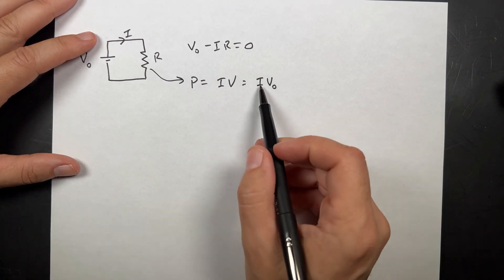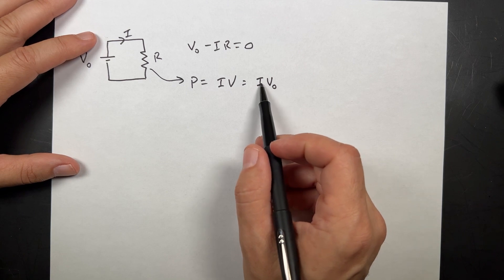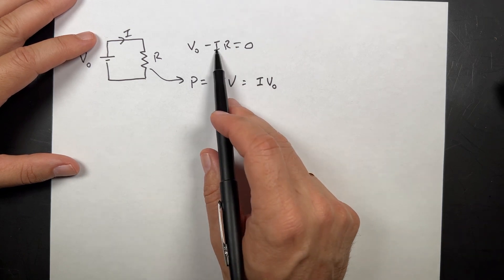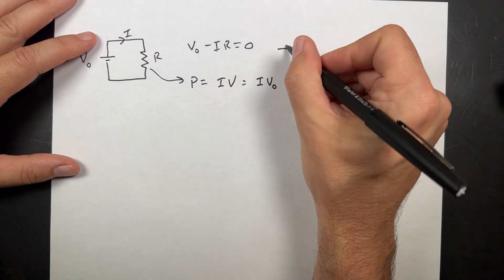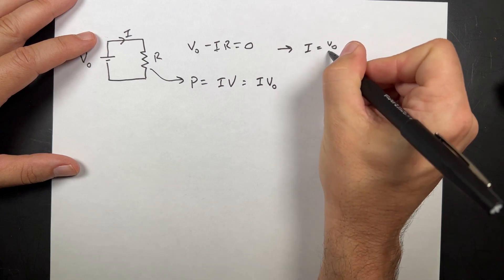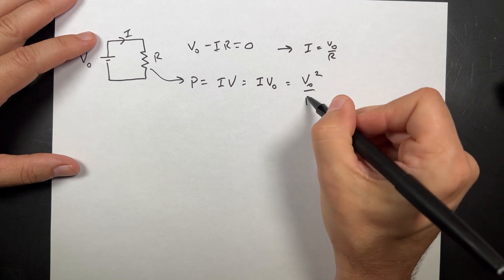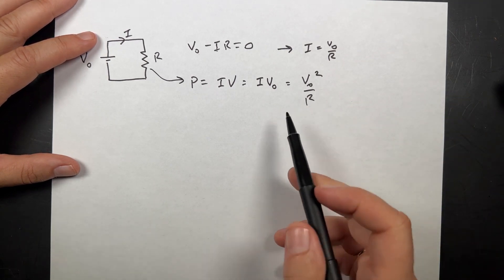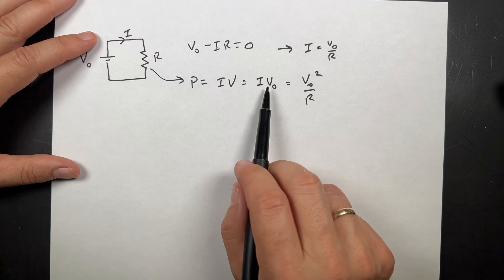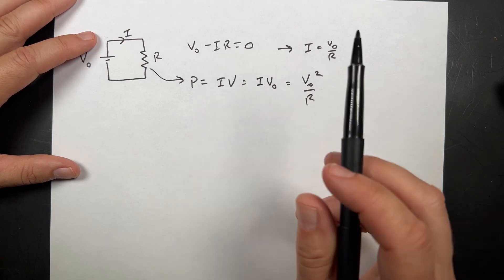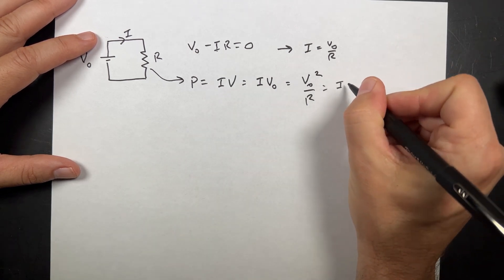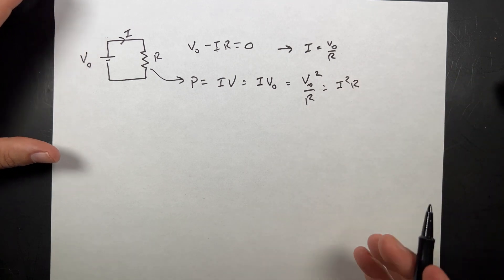Now, you could also replace this I. I could solve for I and get V0 over R. If I put that in right here, I could get V0 squared over R. That's the same thing. Or, if you wanted to, I could solve for V0, which is IR, and I get I squared R. Those are all the same thing. That's power.